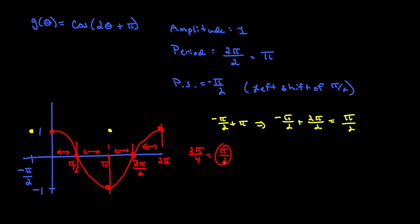Our new function has a period of pi. So now we want to divide that by 4 and that will tell us how often we have to put a dot. So pi over 4. So every pi over 4, we need to put a value there.